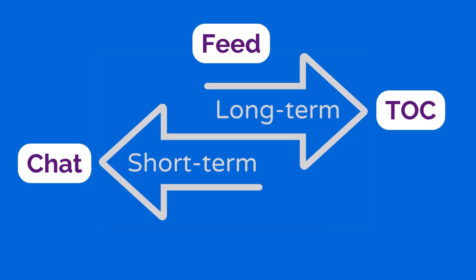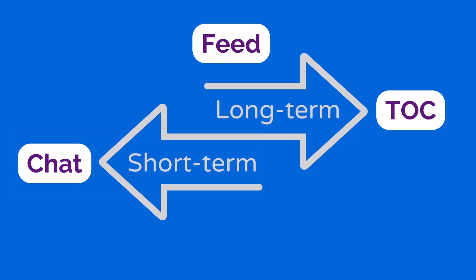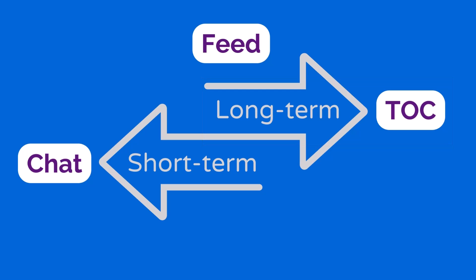If it's a short-term conversation that people really aren't going to want to scroll back and find something shared even two weeks ago, a chat room is a good place for that — it's a more immediate type of conversation. On the other end of the spectrum, with really long-term visibility, is a table of contents: what's shared there stays in the order it was shared, and people are always able to find it. The activity feed is in between those two.